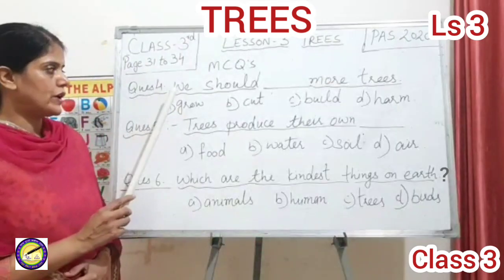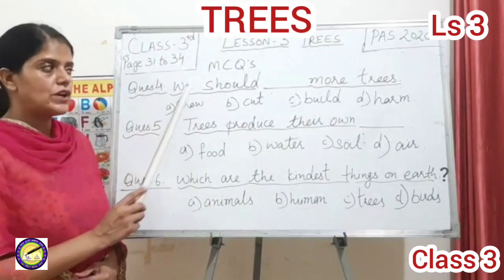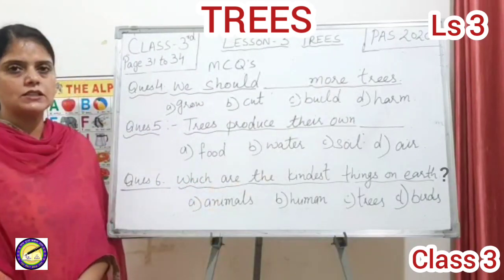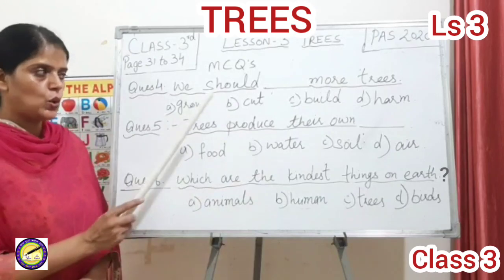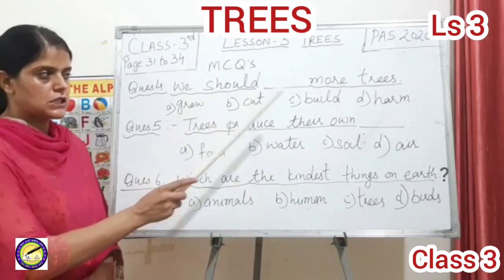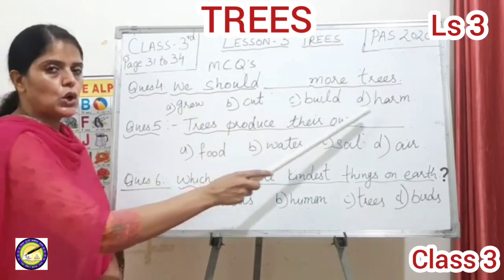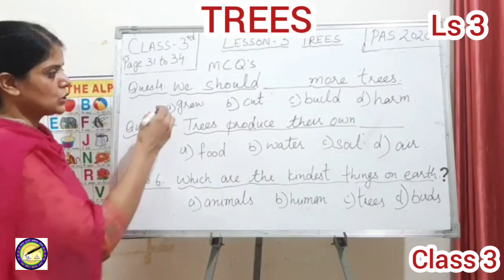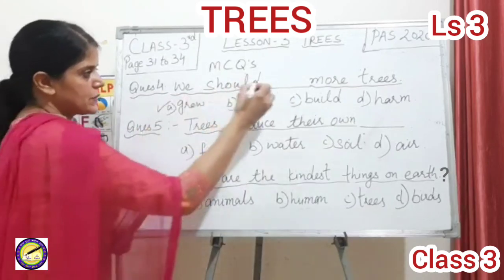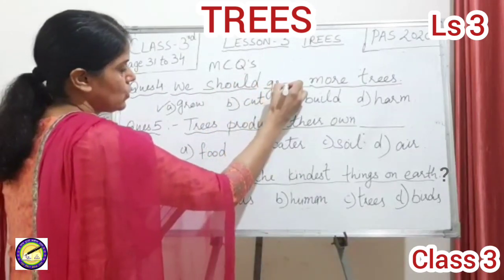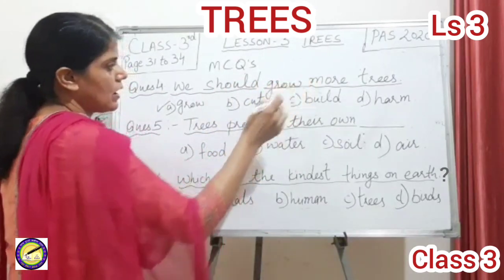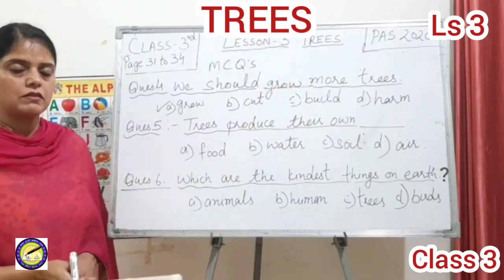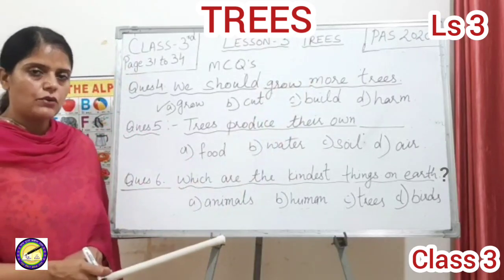Question number four: we should blank more trees. Options are grow, cut, built, harm. We should always grow more trees, because the more trees there are, the greener our environment will be and the cleaner our air will be.